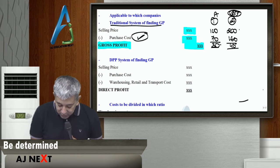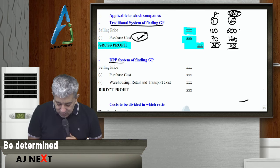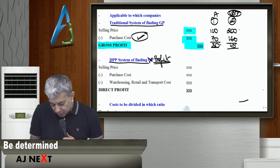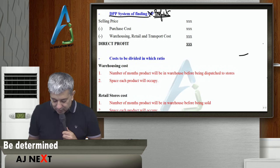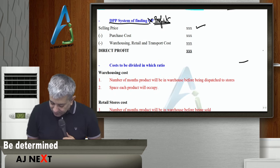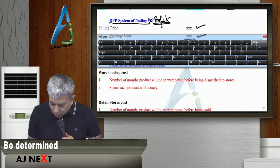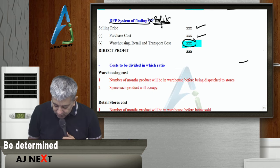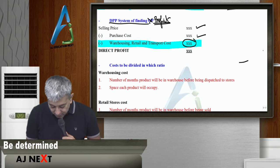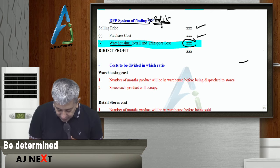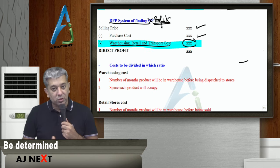This is traditional system. Now, this is DPP system of finding profit. What do we do in DPP system? Selling price, purchase cost, and this is the difference. We will try to put the rest of the cost over here. Which is the rest of the cost? Warehousing cost, retail cost, and transportation cost.